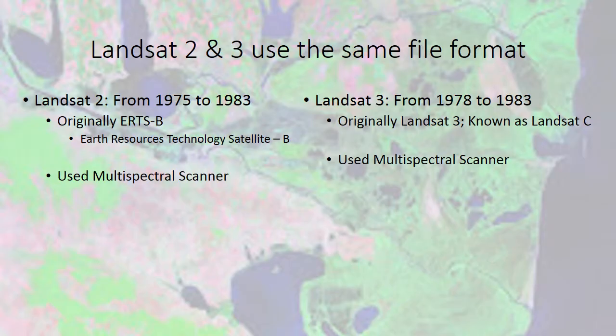Landsat 2 and 3 use the same file format as Landsat 1. It was originally called the Earth Resources Technology Satellite and also used a multi-spectral scanner. Landsat 3, also known as Landsat C, likewise used a multi-spectral scanner.